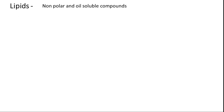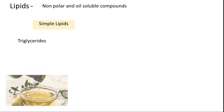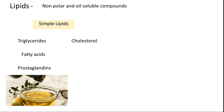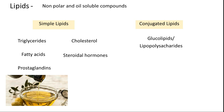Lipids are non-polar, oil-soluble compounds. We can segregate them into simple lipids and conjugated lipids. In simple lipids, we have triglycerides, and from triglycerides we derive fatty acids. Fatty acid-derived compounds like prostaglandins are also considered as simple lipids. Cholesterol is a major non-saponifiable portion of any lipid food material. Steroidal hormones derived from cholesterol are also non-polar and considered as simple lipids. In conjugated lipids, we have lipids bonded with chemicals like sugars or proteins. If a lipid is connected to sugar, we call it a glycolipid — for example, lipopolysaccharide.